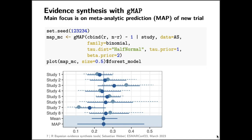The evidence synthesis in RBesT is done with the gMAP command, and here you see an example of how you could analyze this dataset. We recommend that once you've done the MCMC analysis, you also plot the results. Here you see the model estimates in comparison to the stratified estimates from each study — the dashed lines are the stratified estimates and the solid lines are the model estimates.